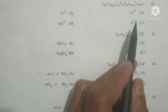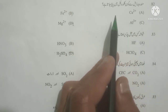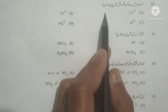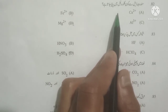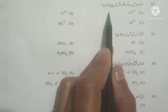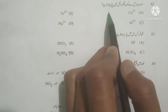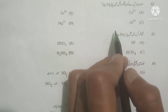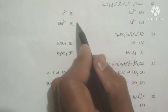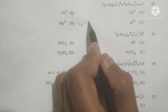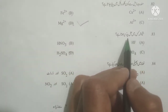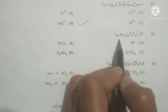Next question: Mundajja zehl se kon chlorophyll mein paaya jaata hai? Which of the following is found in chlorophyll? As you know, magnesium and iron are most commonly found in chlorophyll. Option D is correct.